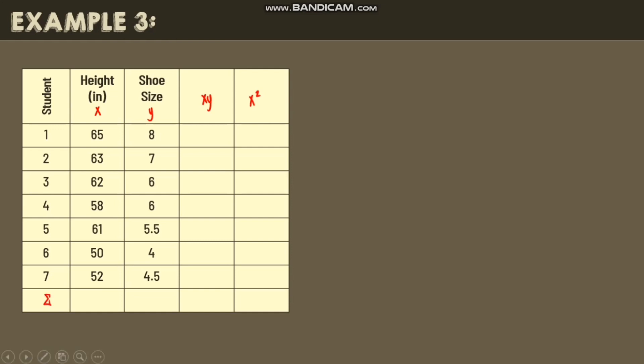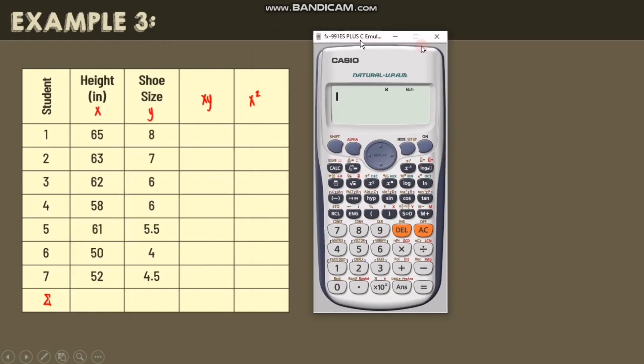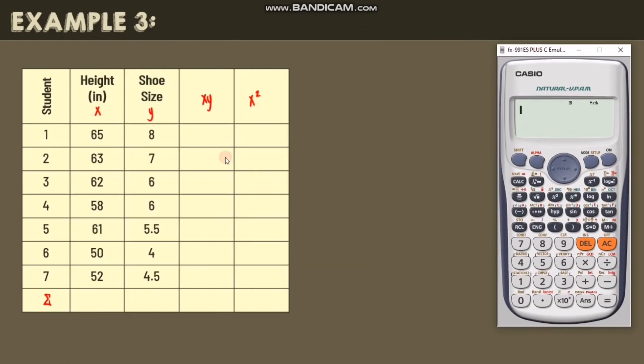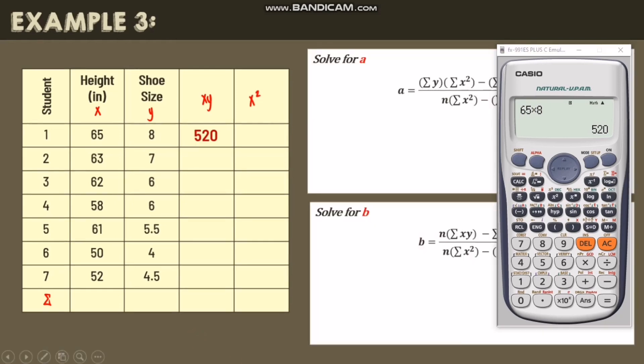First, let's get our xy. So to get xy, we just multiply x and y. So we have 65 times 8, so we have 520.